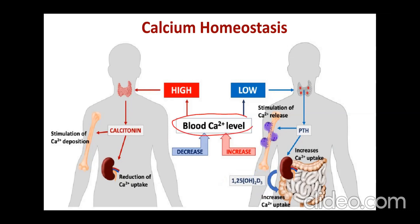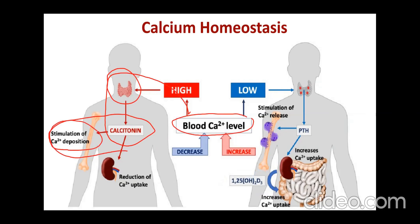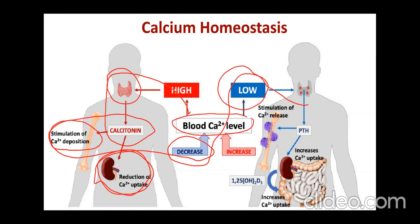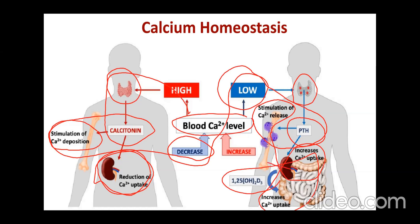When calcium is high — hypercalcemia — it stimulates the thyroid gland, which releases calcitonin. Calcitonin causes calcium deposition into the bones and reduces blood calcium. The kidney and intestine also reabsorb calcium. This cycle is called calcium homeostasis.